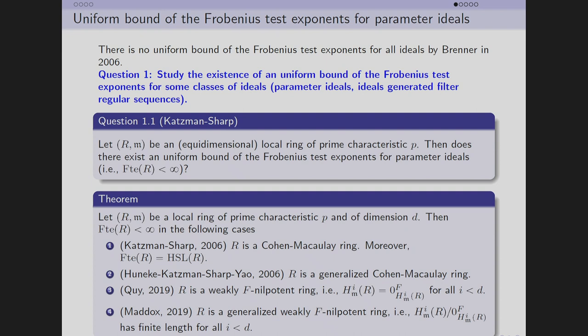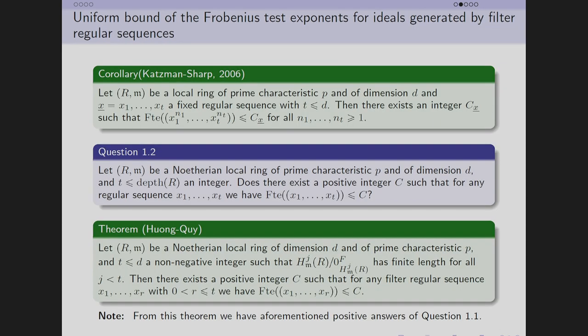In the same year, Huneke, Katzman-Sharp extended this result for generalized Cohen-Macaulay rings. In 2019, we use relative Frobenius action to prove when the ring is weakly F-nilpotent. Maddox extended this result for generalized weakly F-nilpotent rings.